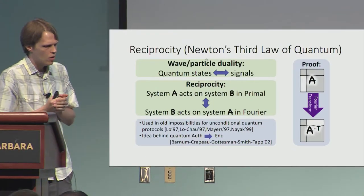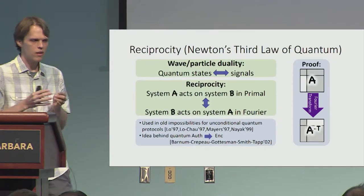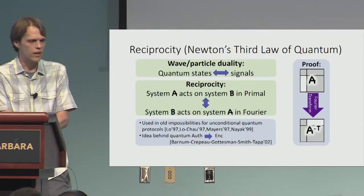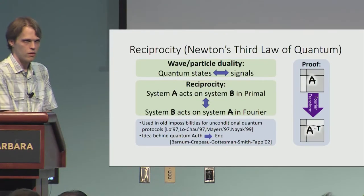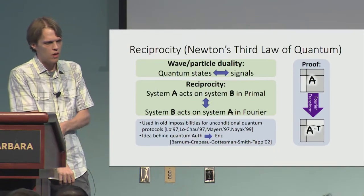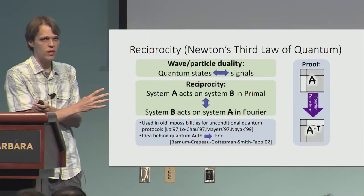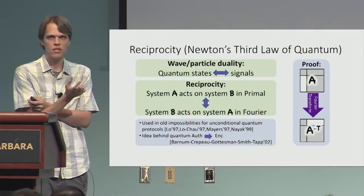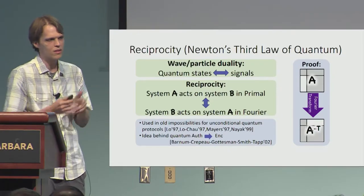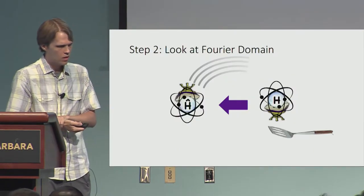The proof of this is basically very simple, using simple rules of Fourier transforms. System A acting on system B in the primal domain, if we think of our operations as linear, basically corresponds to an upper-triangular matrix being applied to the system. When we look in the Fourier domain, applying a linear transformation turns out to be another linear transformation — specifically the inverse transpose — and the inverse transpose of an upper-triangular matrix is a lower-triangular matrix, which corresponds to system B acting on system A.